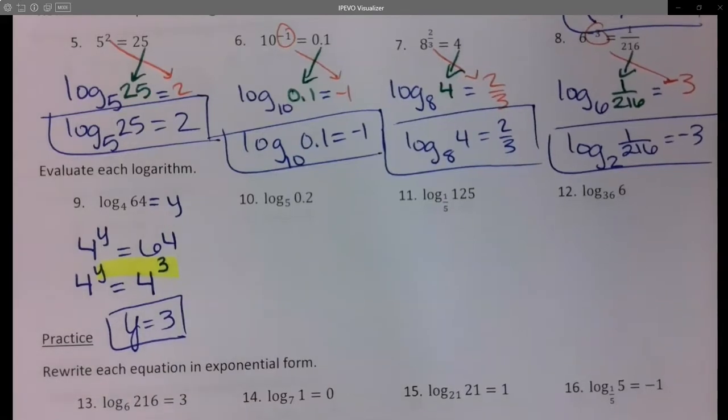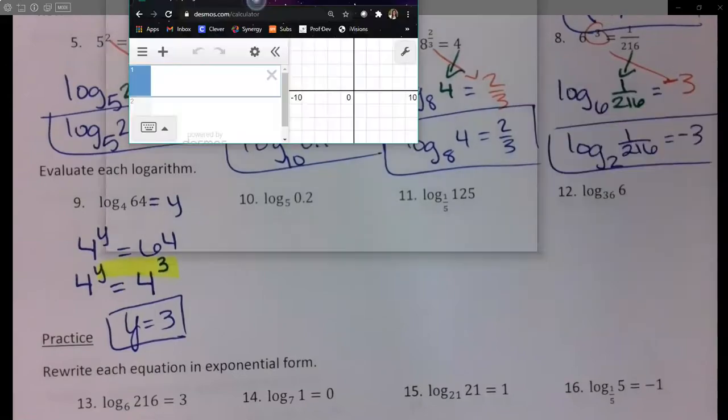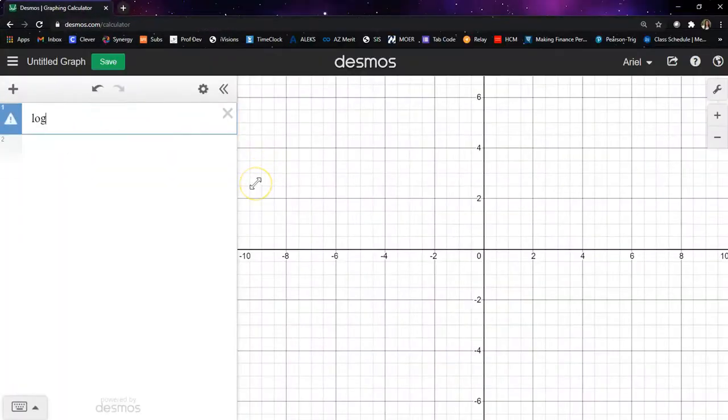So I can keep doing this by hand, or I can go to Desmos and type this in. I can type in log, and then if I do shift the button next to 0, I can get the underscore, 5, and then arrow out, 0.2. It gives me negative 1.